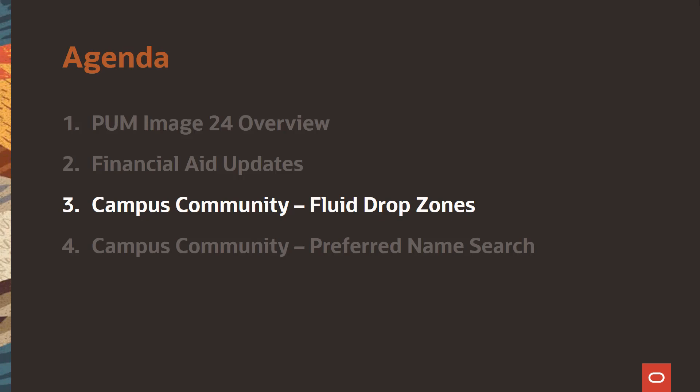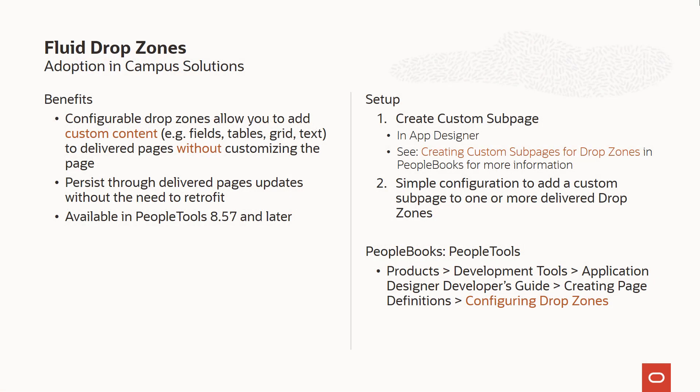In PUM Image 24, we have delivered drop zones for the first group of fluid self-service pages. Drop zones are a PeopleTools feature that allows you to add custom content to a delivered page without making a direct customization to the page. Because the custom content is added by configuring the drop zone, the content will persist through any delivered page updates and doesn't require retrofit in the same way as a direct page customization would.